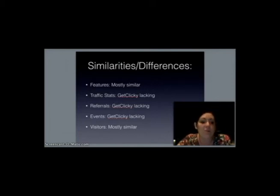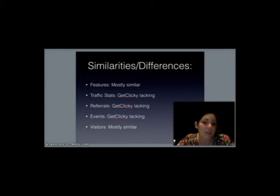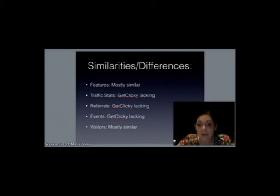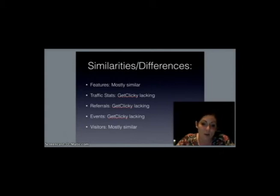In terms of events, all three provide click-throughs, downloads, and flash events. However, GetClicky doesn't provide multimedia streams, error pages, bookmarks, stats, or RSS feed subscriptions, which could potentially hurt us in the end. As far as visitors go, all three provide browser information, JavaScript, IP address, name of organization, country, state, city, and language. But GetClicky does not provide cookies, ISP, or time zone. And Adobe Analytics doesn't provide username.